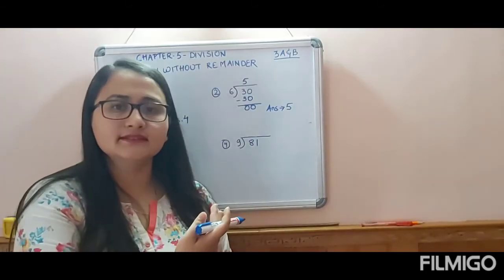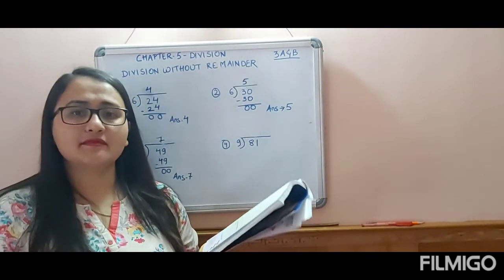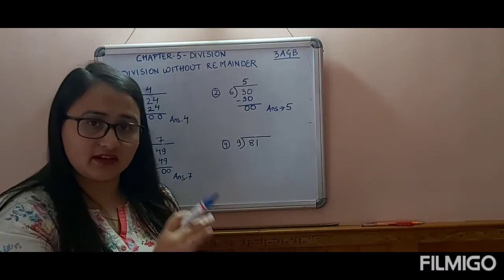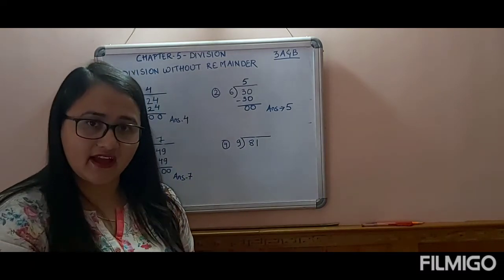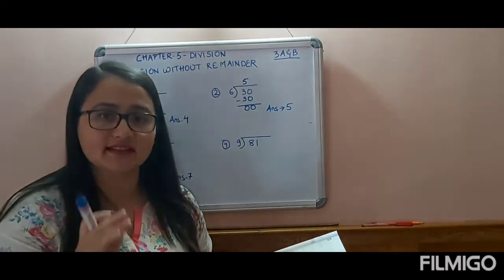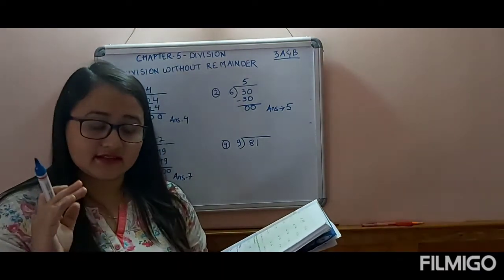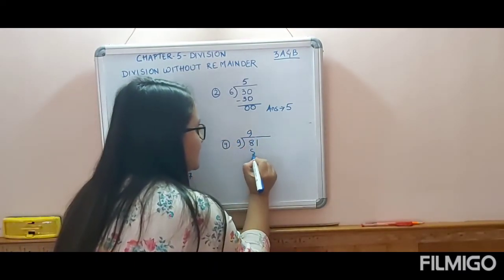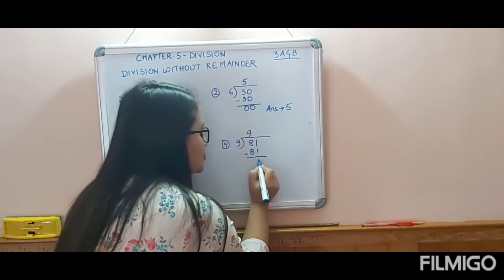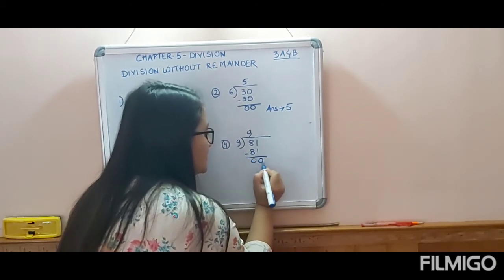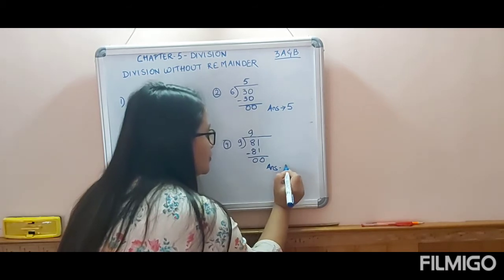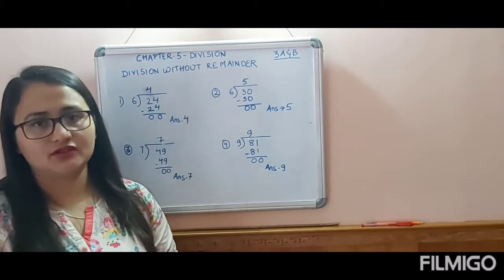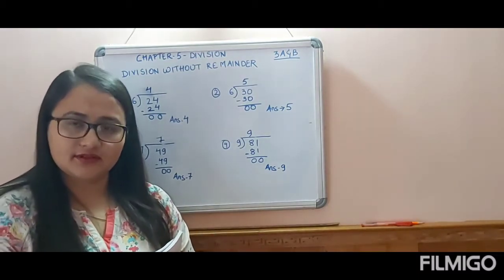Last sum without remainder: table of 9 — 9 ones are 9, 9 twos are 18, 9 threes are 27, 9 fours are 36, 9 fives are 45, 9 sixes are 54, 9 sevens are 63, 9 eights are 72, 9 nines are 81. Those who have not learned the table, please learn it, because you cannot do division without your multiplication table.